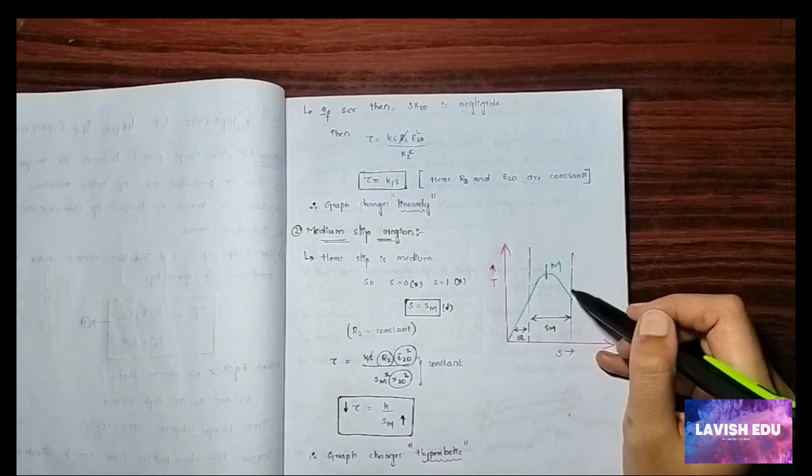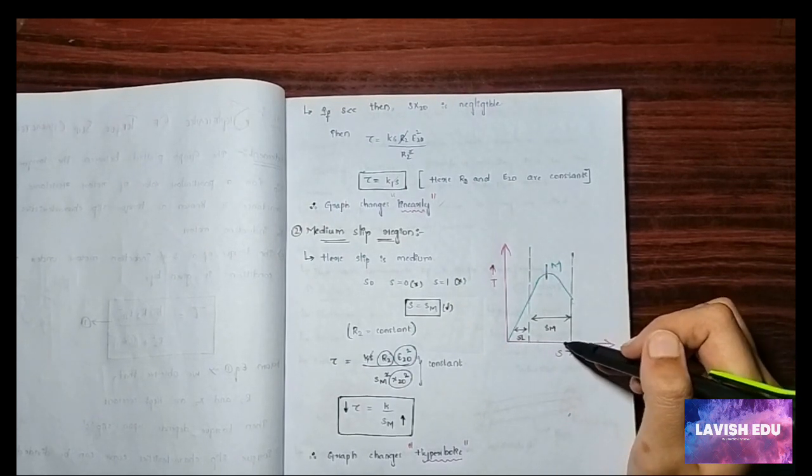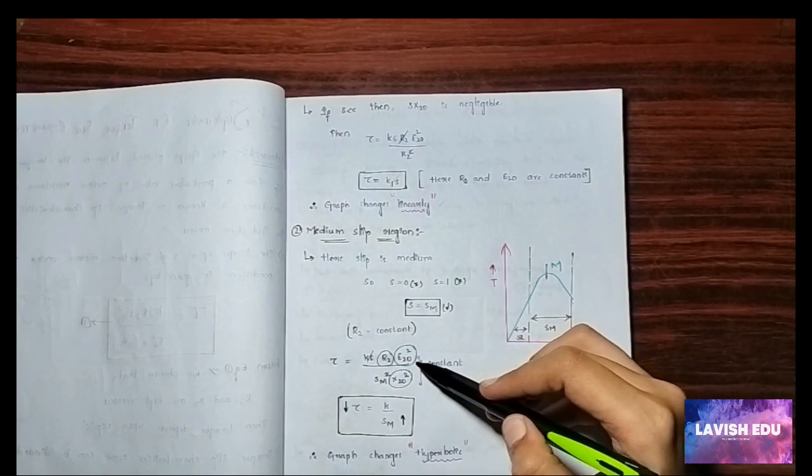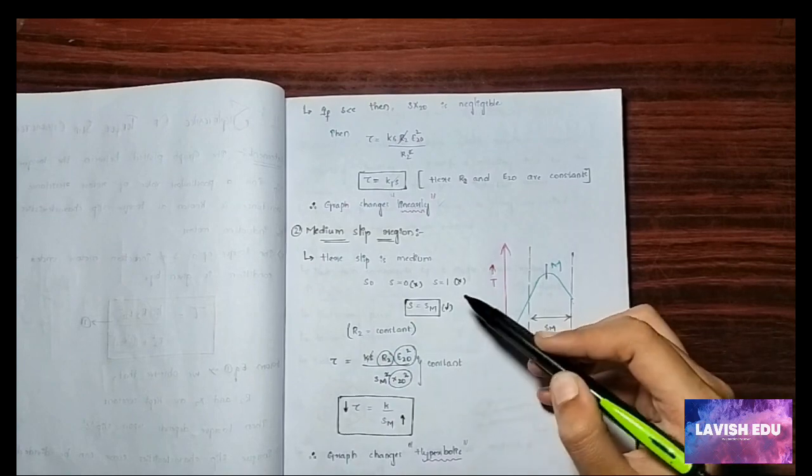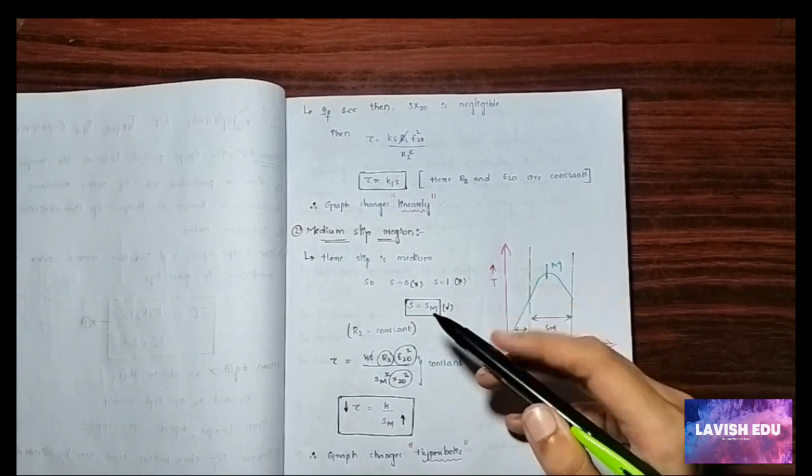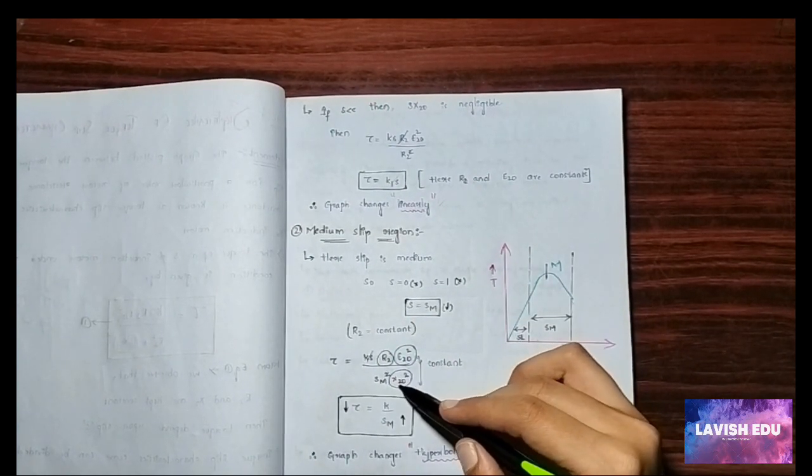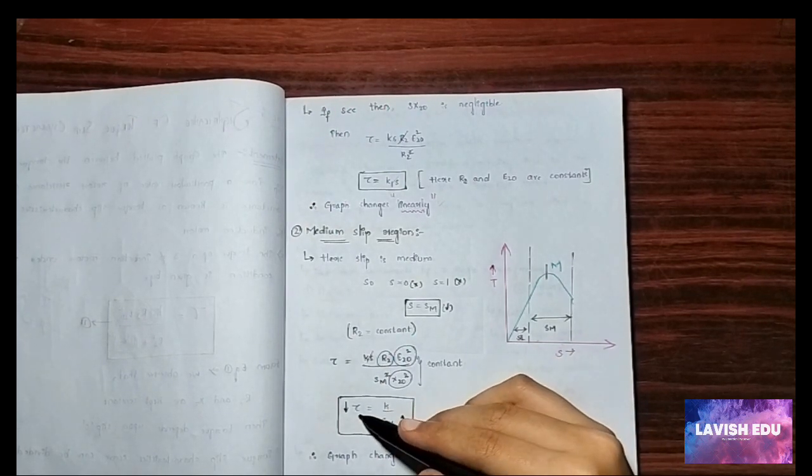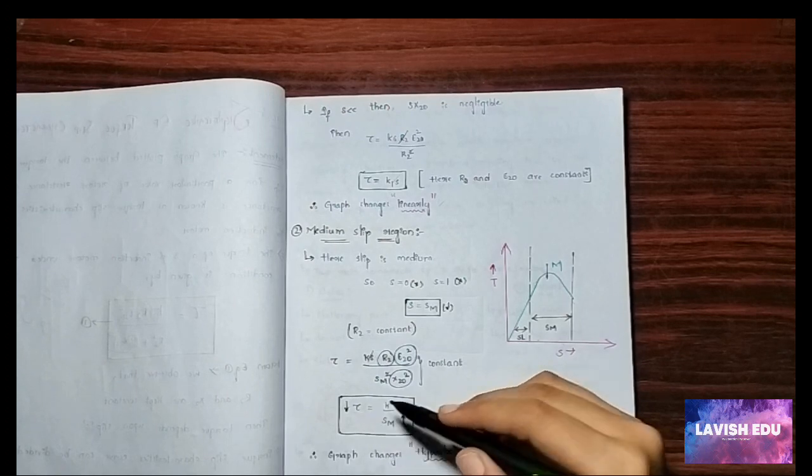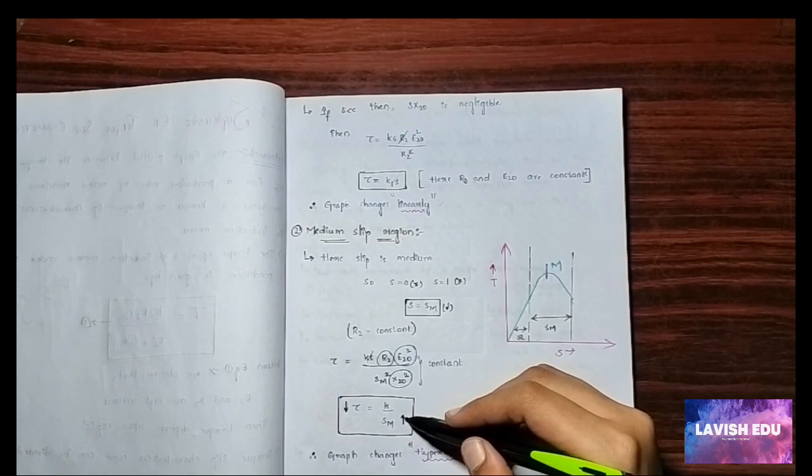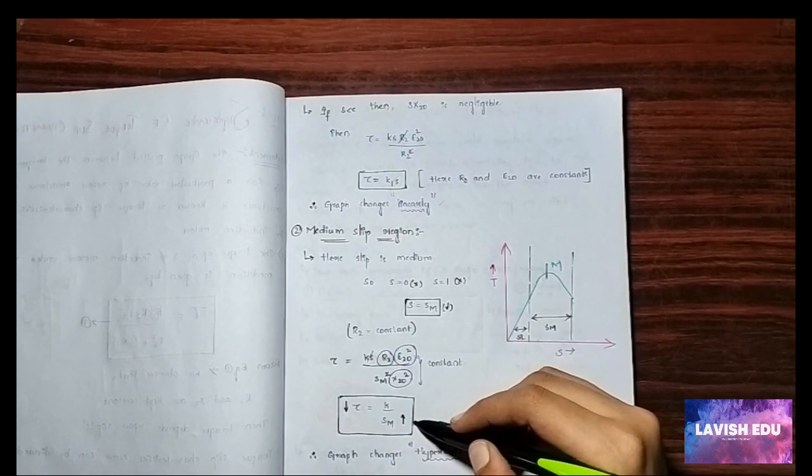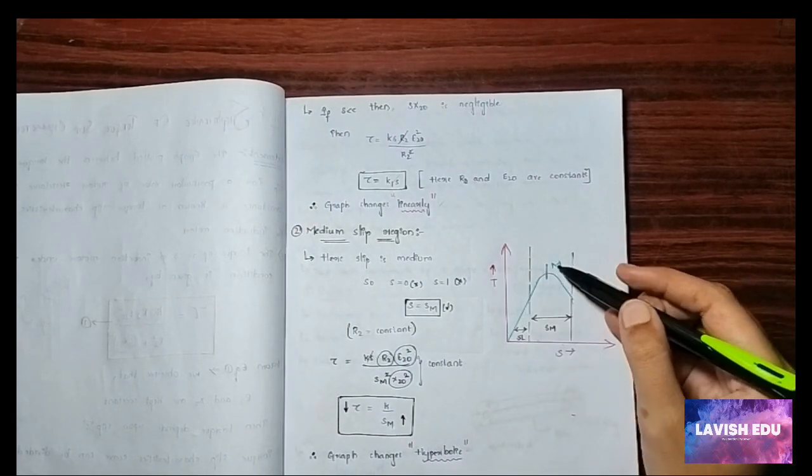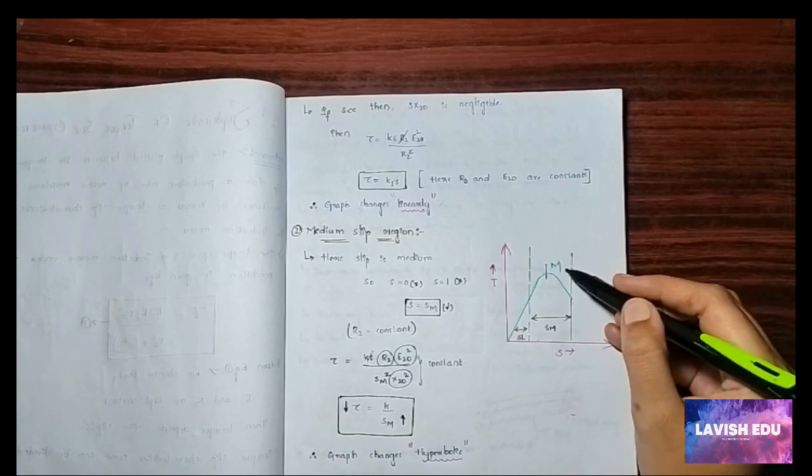Here torque equals K·R2·E20 / sm. This is the torque formula in the three-phase one. As we have already observed, X20, E20 are constants. By applying this formula, as the torque decreases, the slip increases, so it is inversely proportional. Then we can get a hyperbolic curve.